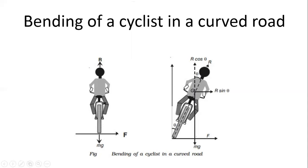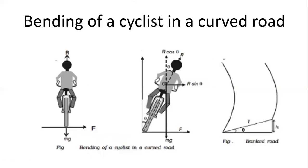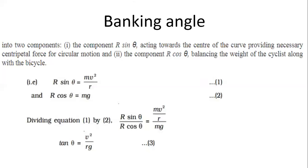R·cos θ equals mg — the weight of the cyclist. R·sin θ provides the centripetal force, which equals mv²/r. The banking angle of the road is theta, and the distance between two sides of the road is l. Using this we can calculate the banking angle.